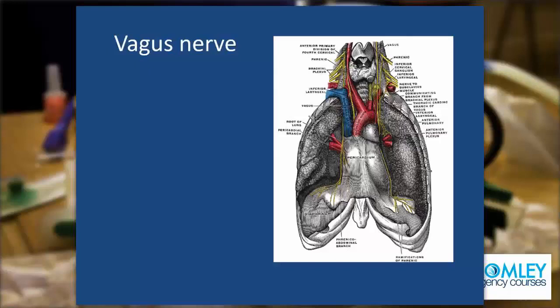That's where the right recurrent laryngeal winds back to get up to the larynx. On the left-hand side, the vagus carries on further down and the recurrent laryngeal nerve on the left side winds behind the ligamentum arteriosum before travelling back up towards the larynx. The vagus nerves on both sides then carry on around the oesophagus into the abdomen, innervating the stomach and the intestines and providing parasympathetic fibres further on into the gut.